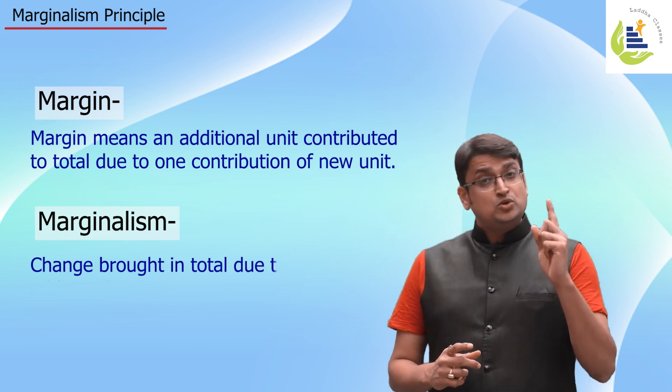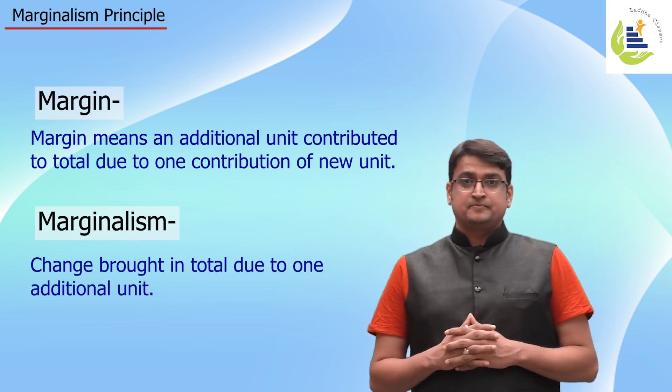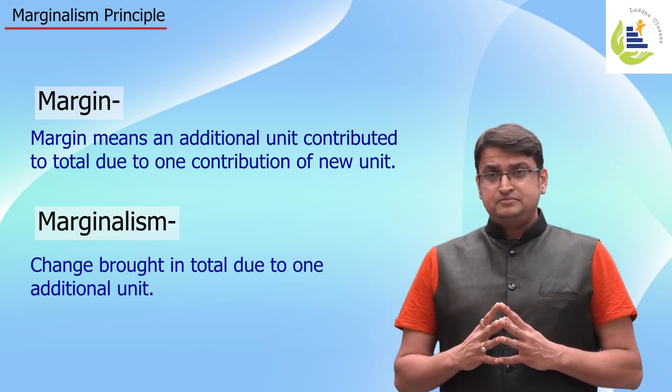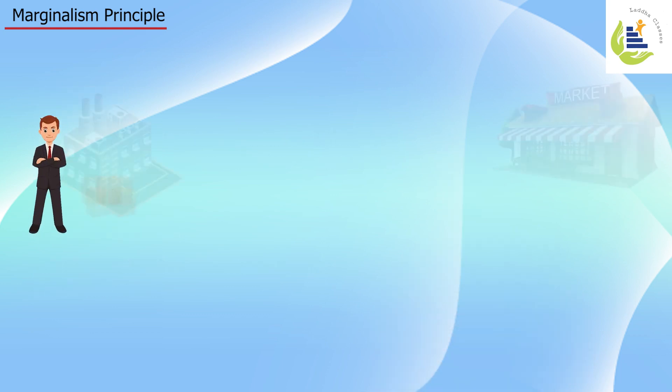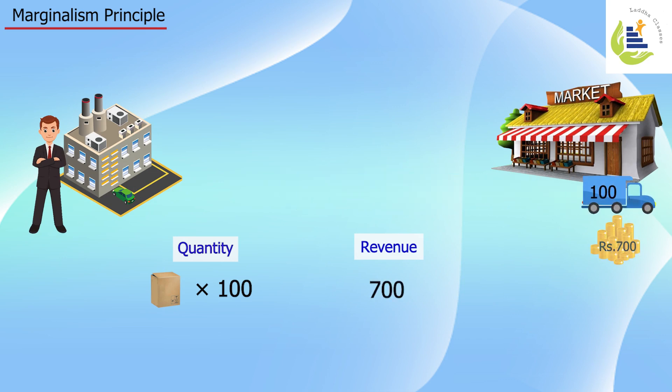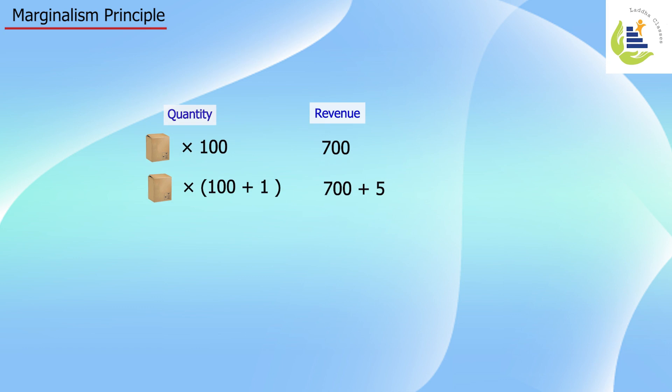I'll explain this with an example. Let's say I'm a producer. I sold 100 units and got 700 rupees for that. When I sold the next unit, I got a total of 705 rupees. What does this mean? Because of one additional unit, there is an increase of five rupees in my total collection, my total revenue.